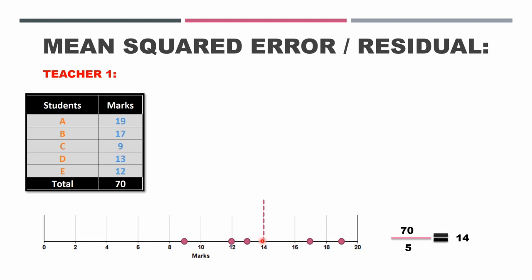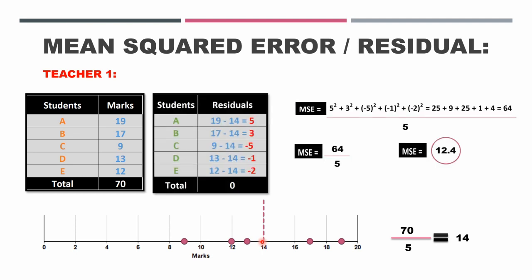Now he calculated the distance of each of these pupils from this mean value. That is 19 minus 14, the marks that this pupil scored minus the mean marks. So this is the distance between the actual value and the observed, the deduced value, which is 14.